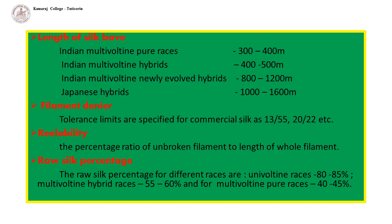Filament Denier: The denier decreases from outside to inside gradually. Tolerance limits are specified for commercial silk, such as 13/15 and 20/22. Reelability is the percentage ratio of unbroken filament length to the total length of the whole filament.